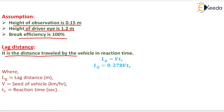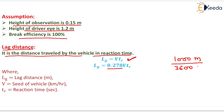Lag distance is the distance traveled by the vehicle during reaction time. It equals V multiplied by TR, where V is the speed of the vehicle in kilometers per hour and TR is the reaction time. By this formula the lag distance comes in kilometers, but we want it in meters. So we convert km/h into m/s by multiplying by 0.278 — derived by multiplying by 1000 in the numerator and dividing by 3600 in the denominator. So the lag distance equals 0.278 × V × TR, giving the result in meters.